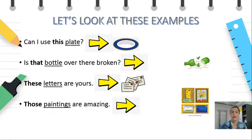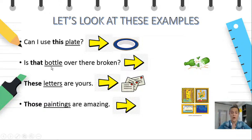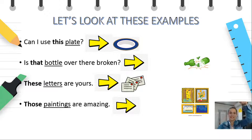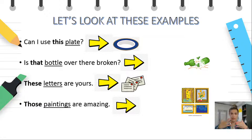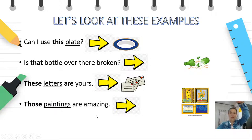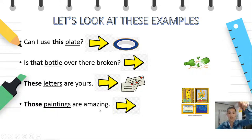Now we look at the broken bottle. Is it near to you or is it far from you? We can see that it's further from the arrow, so it's far from you. We say: Is that bottle over there broken? One bottle, singular, far from me. Now look at the third example — these letters, three letters, close to me, near to you, plural. Those paintings over there are far from me — those paintings over there are amazing. We can see the paintings are further from the arrow.